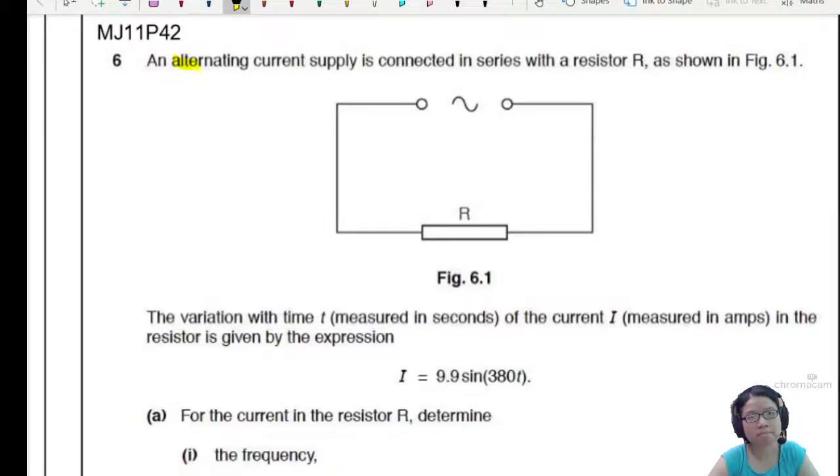So this is a pretty standard one. There is an alternating current supply connected in series with a resistor R. So this is our resistor R and this is our AC supply.